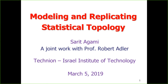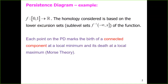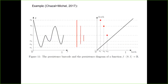I will give some words about the persistent diagram before we continue, just to be sure that everything is clear. Suppose we have some one-dimensional function from [0,1] to R, and we consider the sub-level sets going from minus infinity to some x. By Morse theory, once we have a local minimum, we consider it as a birth time.